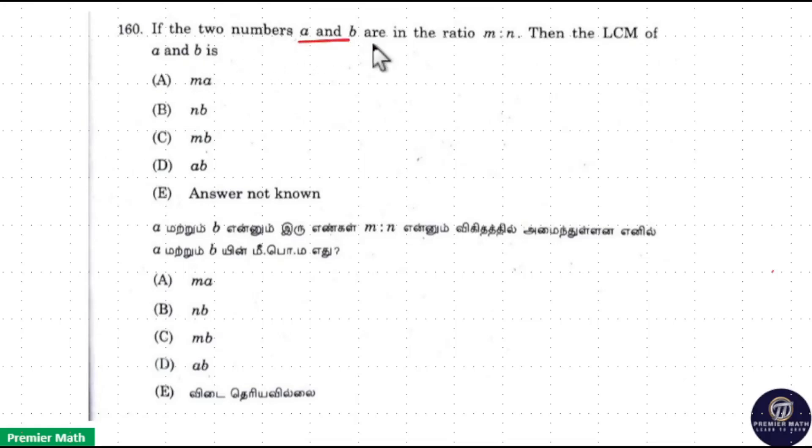If the two numbers A and B are in the ratio M is to N, then the LCM of A and B is... Here ratio of two numbers is M is to N, which means I can write it as Mx is to Nx is A is to B.